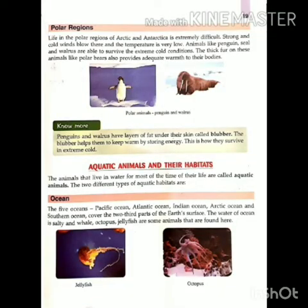The two different types of aquatic habitats are: Jaliyen nivaas walay janwaron ke asthaan ke doh alag-alag prakar hote hain. First, oceans — yani mahasagar. The five oceans are Pacific Ocean, Atlantic Ocean, Indian Ocean, Arctic Ocean, and Southern Ocean. They cover two-thirds of the earth's surface.